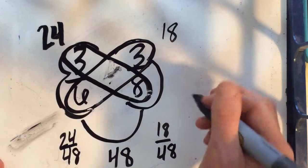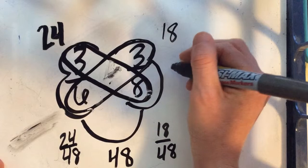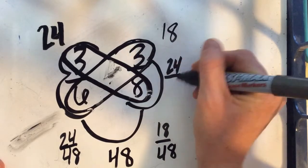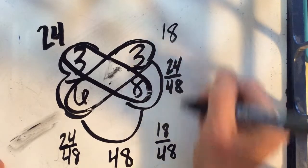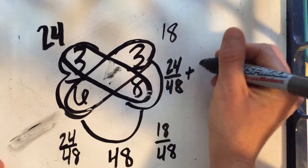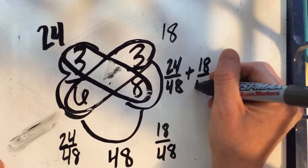Okay, so now we have our new addition problem: 24 forty-eighths plus 18 forty-eighths.